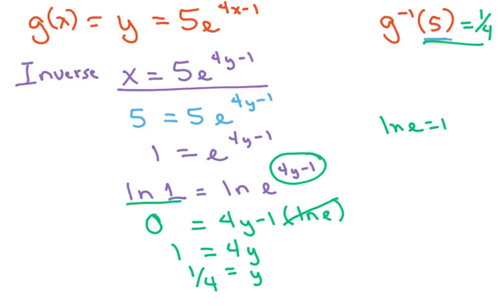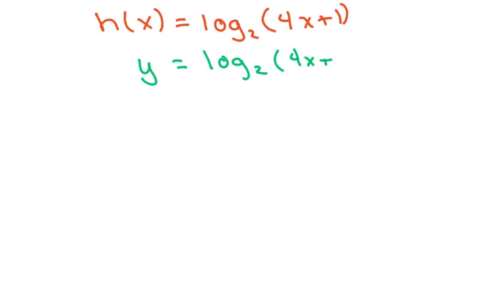And now let's do the h one. The h function—h of x equals log base 2 of 4x plus 1. I'm going to go ahead and change this to y. And then we are evaluating the inverse at 2 of h. So basically to find the inverse all you do is switch the x and the y.